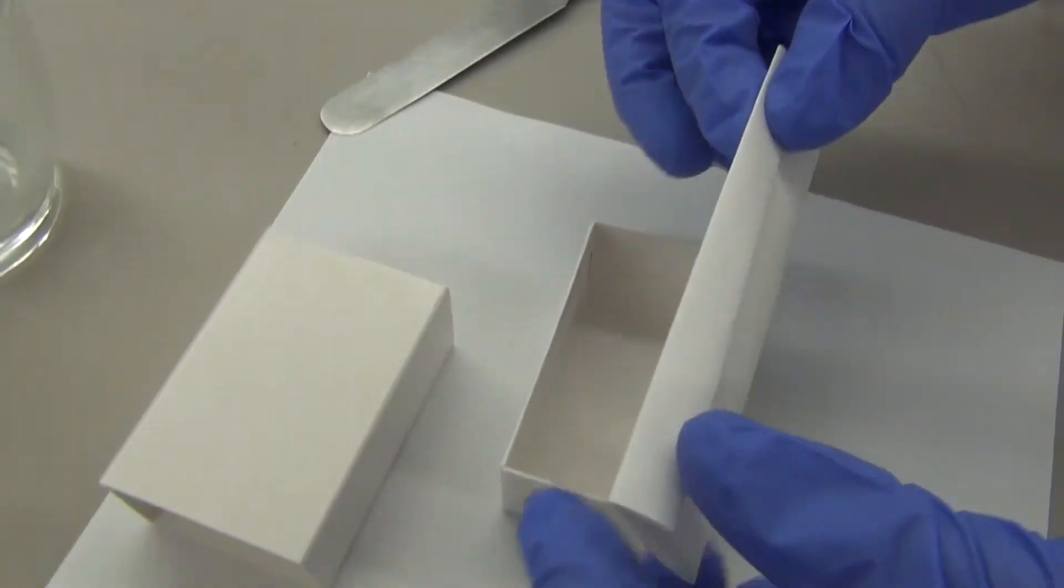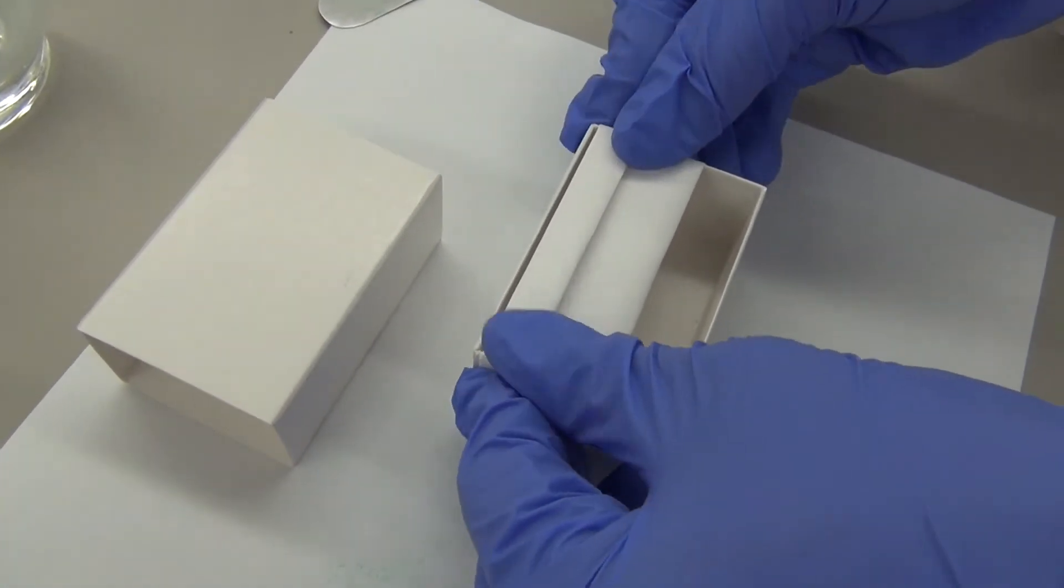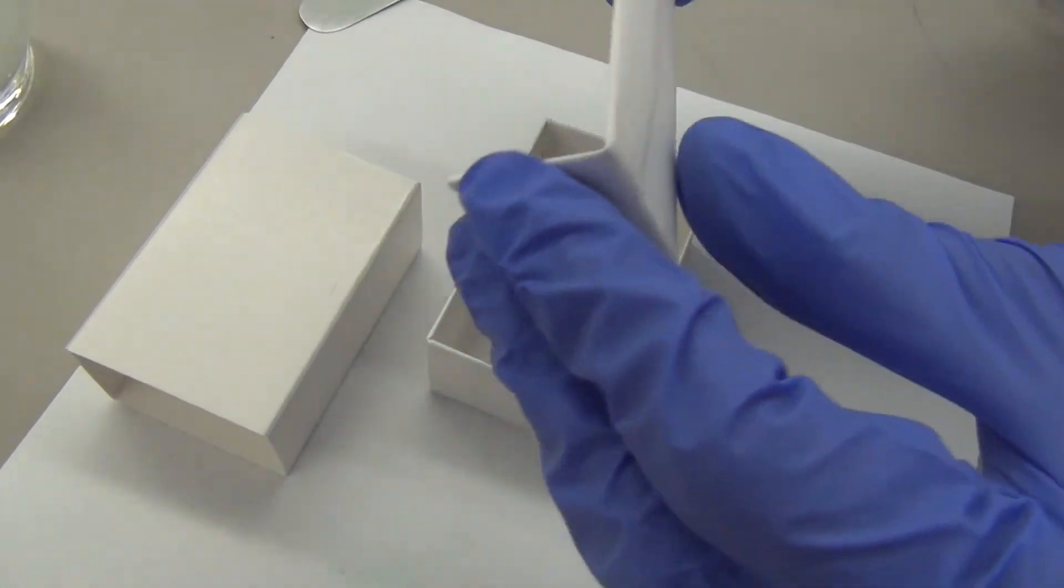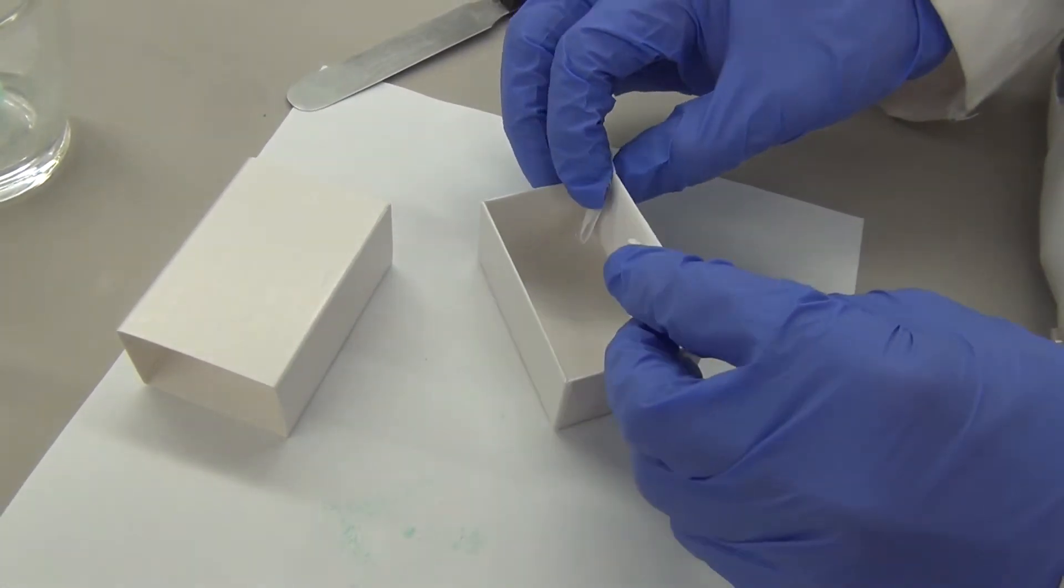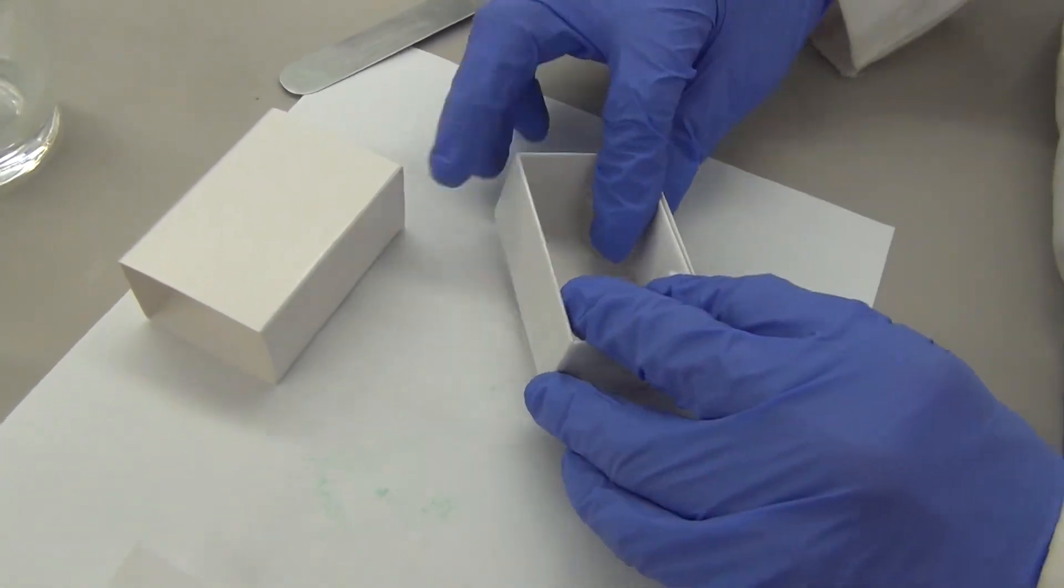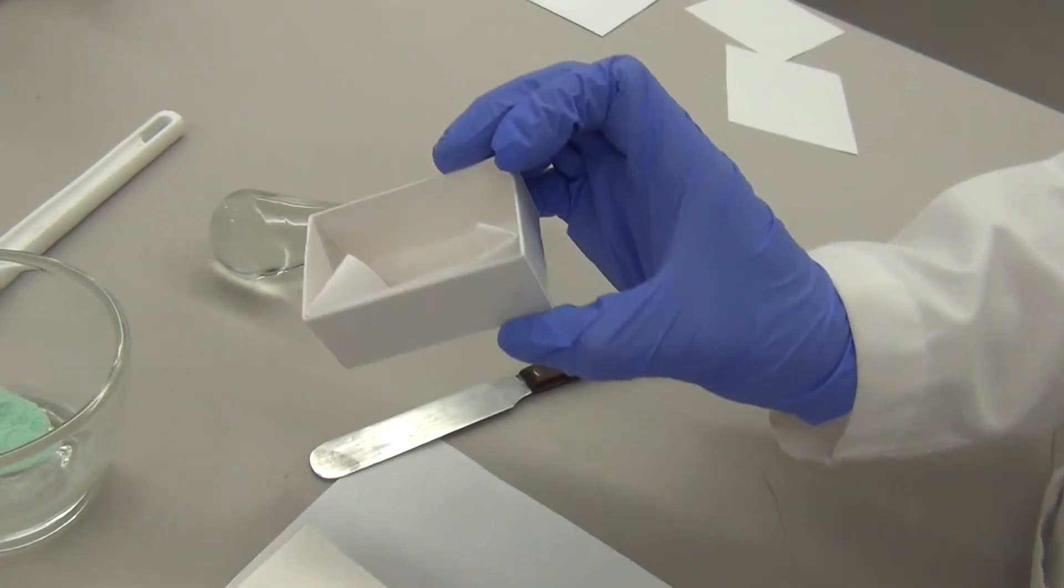You are going to line up the edges of the paper with your divided powders box. This will tell you where you need to fold the paper in order to get it to fit into the box.